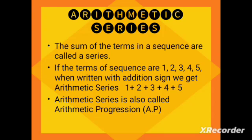In part b, the sequence is increasing by a ratio of 2, because 2 over 1 is 2, 4 over 2 is 2, 8 over 4 is 2, and 16 over 8 is 2. So the common ratio is 2, which means the next term would be 32. Because it involves a common ratio, this is a geometric sequence.